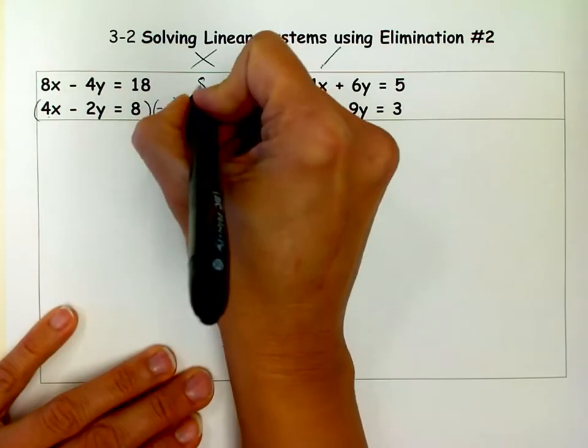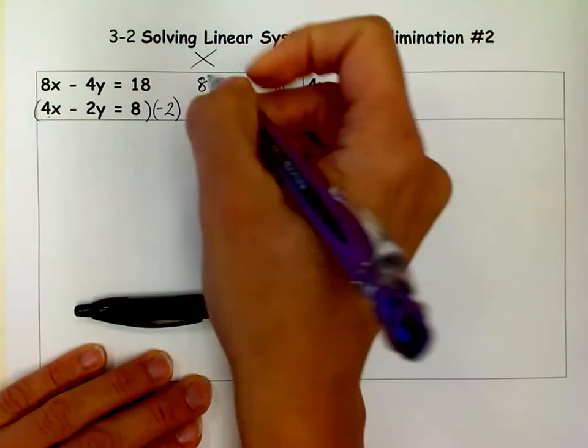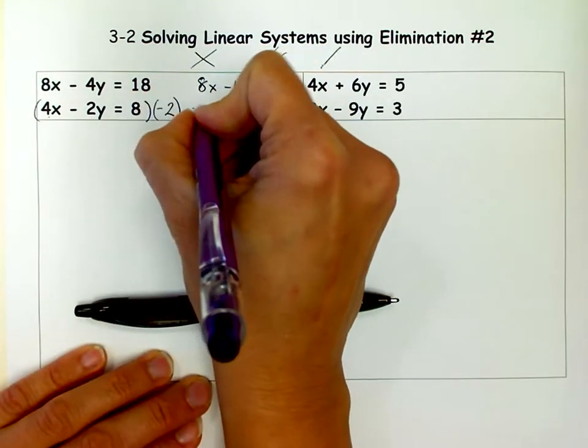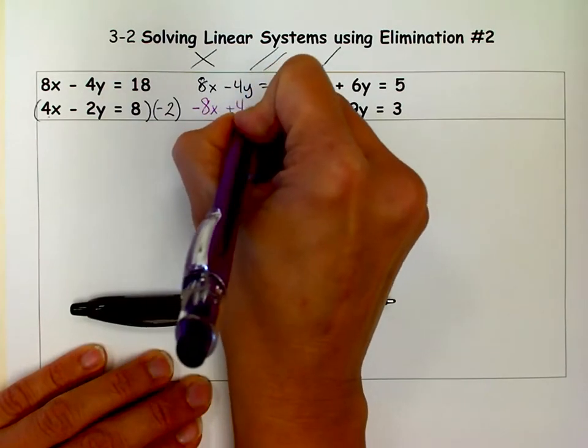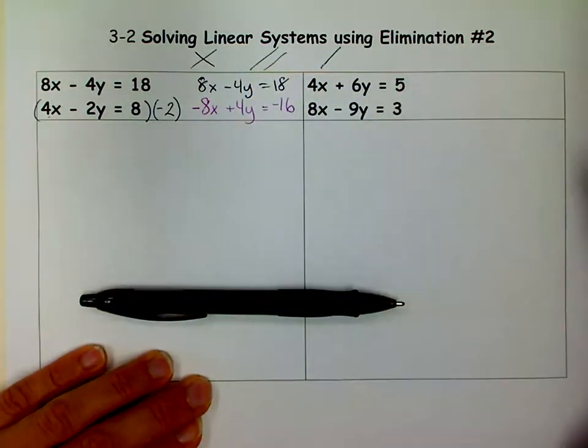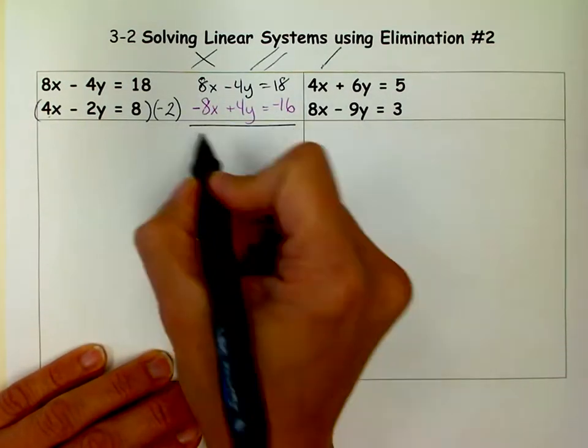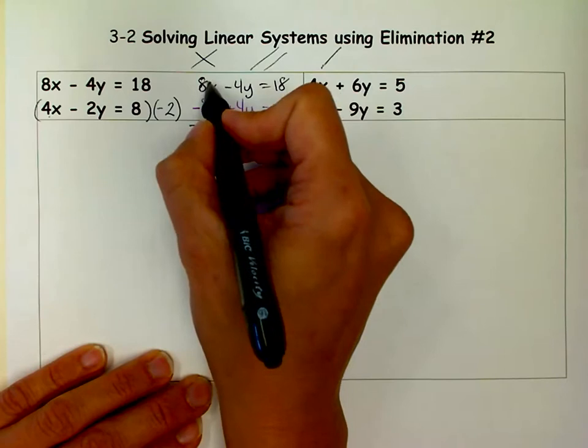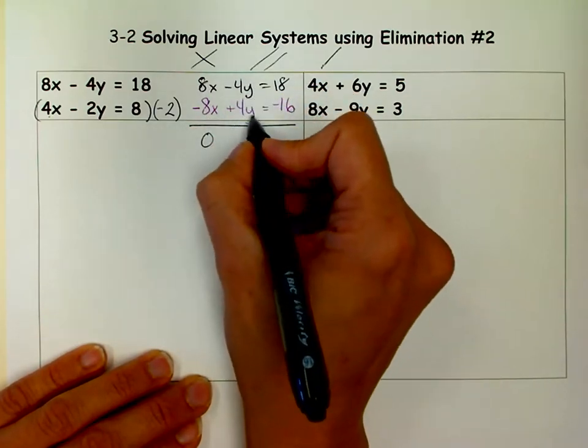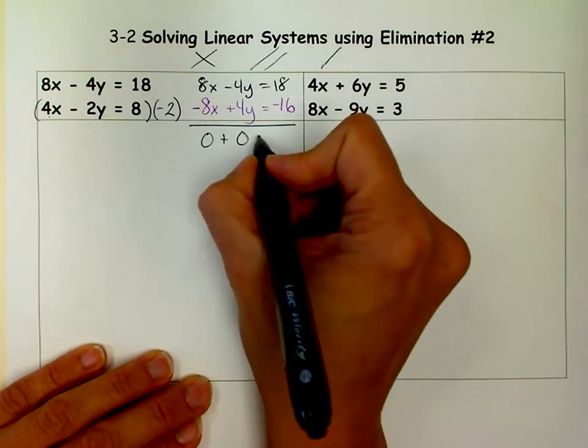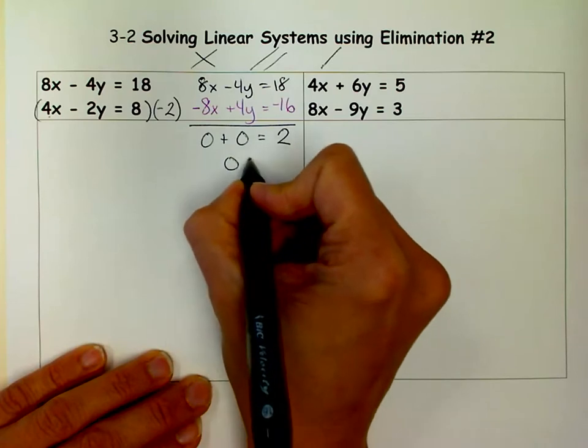So that's what I do. I'm going to rewrite the first one, 8x minus 4y equals 18. But I'm going to rewrite the second one after multiplying it by negative 2. So I'm going to get negative 8x plus 4y equals negative 16. So now you see that these are opposites. So when I add them, they're going to cancel out. 8x minus 8x is 0. But look what happens here too. The negative 4y and the 4y also get me a 0. And I'm left with 0 equals 2.